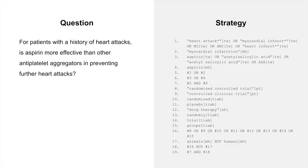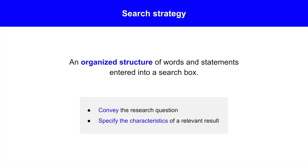In this video, we'll develop a literature search strategy for a systematic review. We'll translate this research question into a search strategy for the PubMed database. A search strategy is an organized structure of words and statements entered into a search box. It gives search directions to a database and conveys the research question, specifying the characteristics of a relevant result.